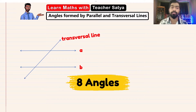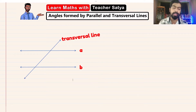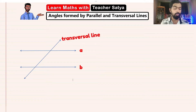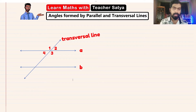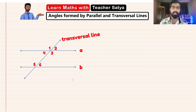Now let's go ahead and name these angles. So let me call this angle 1, angle 2, angle 3, angle 4, and this as angle 5, angle 6, angle 7, and angle 8.